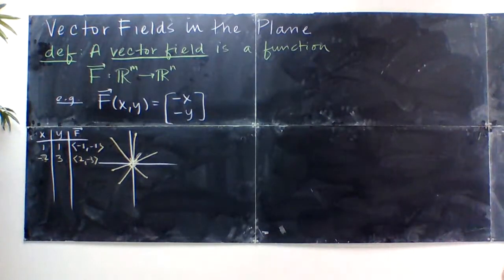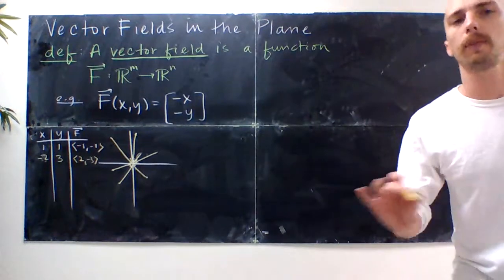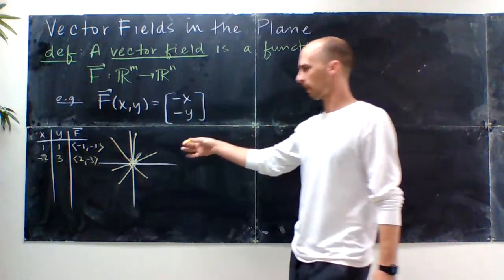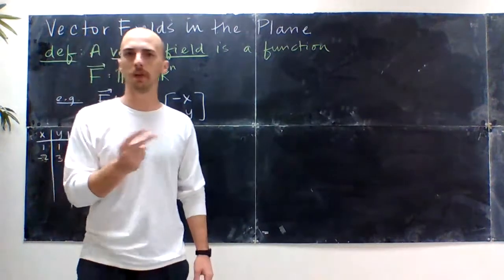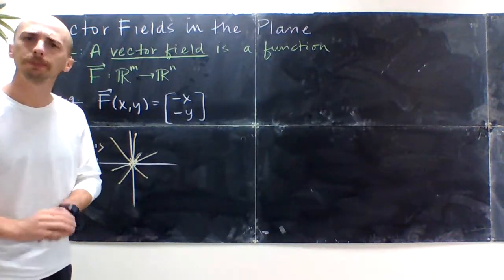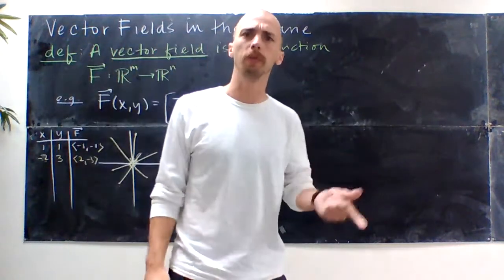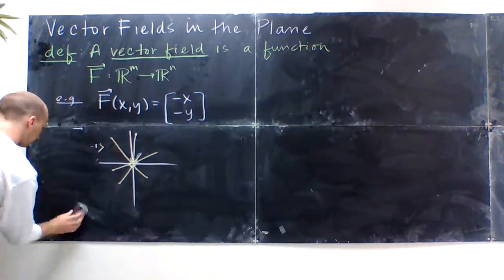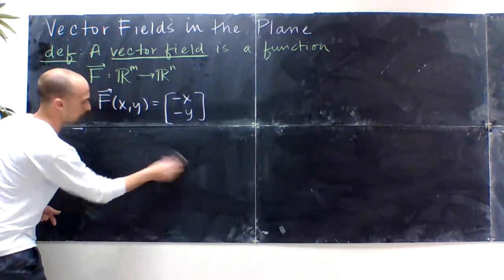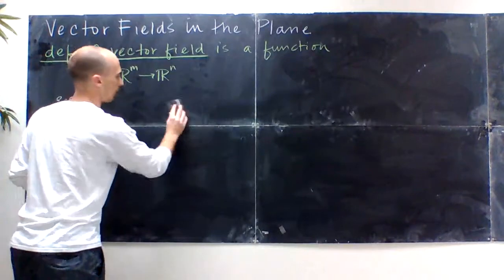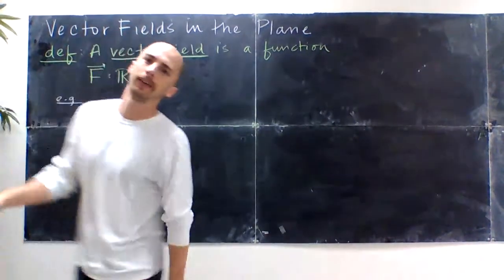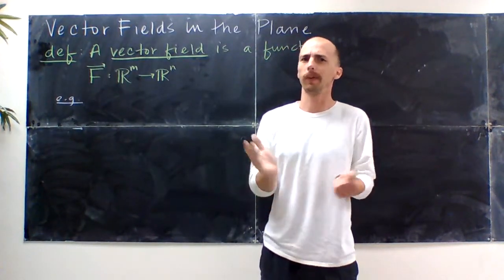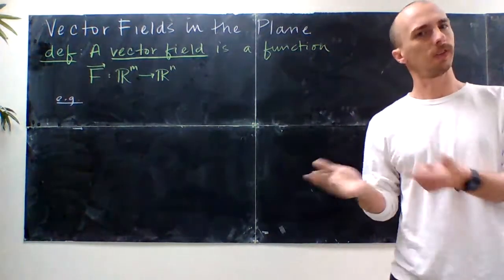Wait — we've seen this before. We've seen a plane with what looks like vectors on it in AP Calculus: slope fields. That's an example of a vector field. When we had dy/dx as a slope, we kind of always made the length equal to 1 just so it wasn't too noisy. But that was, in a sense, a vector field.